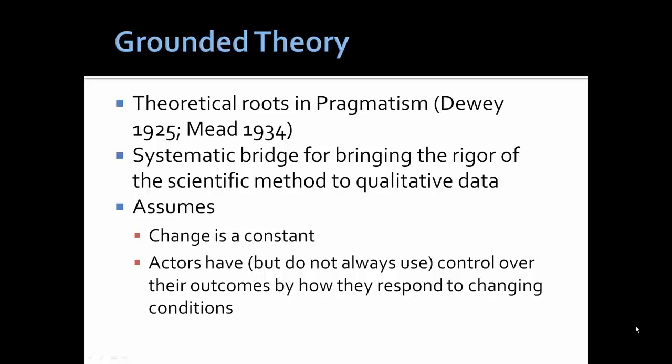Grounded theory has its roots in pragmatism. The procedures and canons for grounded theory provide a solid foundation on how to organize a research project using observational or other qualitative research data. The strategy has its roots in the early Chicago school, especially the work of Dewey and Meade. It provides a systematic bridge for bringing the rigor of quantitative methods, the scientific method, to qualitative research.